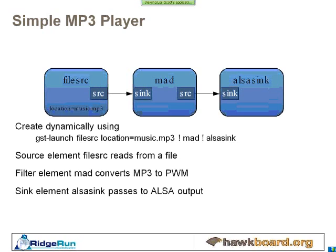The tool we can use is called GSTLaunch, or GStreamer Launch, and you describe the pipeline in a similar way to how Unix describes a pipe at the command line. In Unix, you use the vertical bar symbol to separate elements of a pipe. In GStreamer, we use the exclamation point — which I typically call 'bang' — to separate elements. So we have GSTLaunch, the first element is file source with a location parameter set to music.mp3, then we pass it to the MAD element, and then to the ALSA sink element. To create a simple MP3 player on your Hawk board, you run the GSTLaunch command shown on this slide.